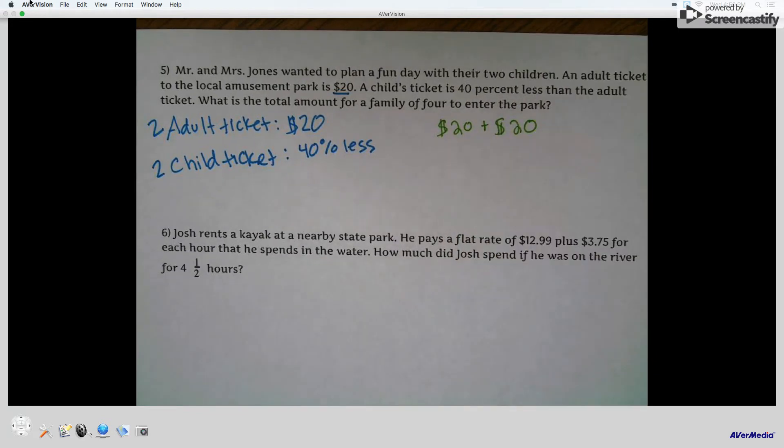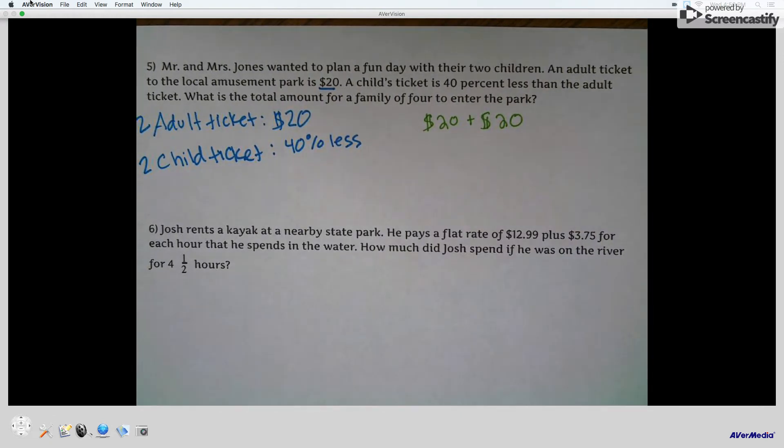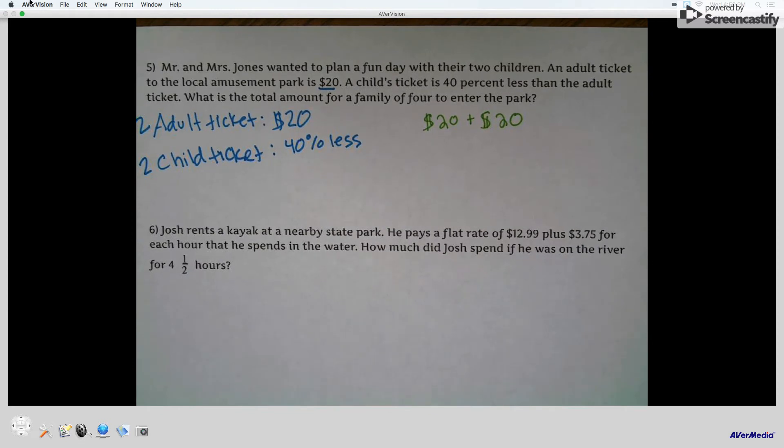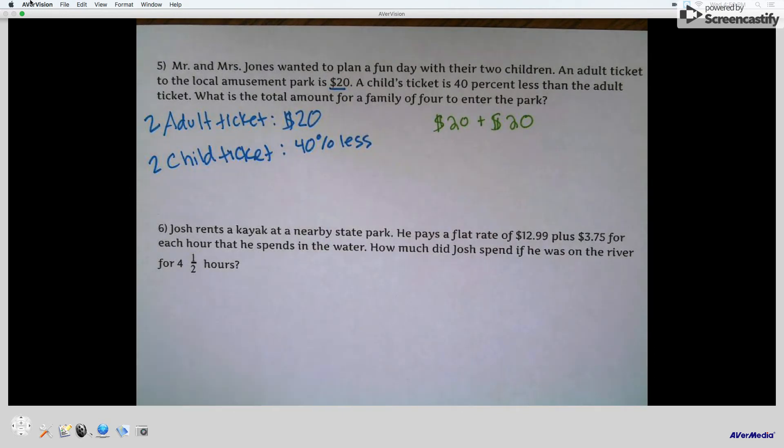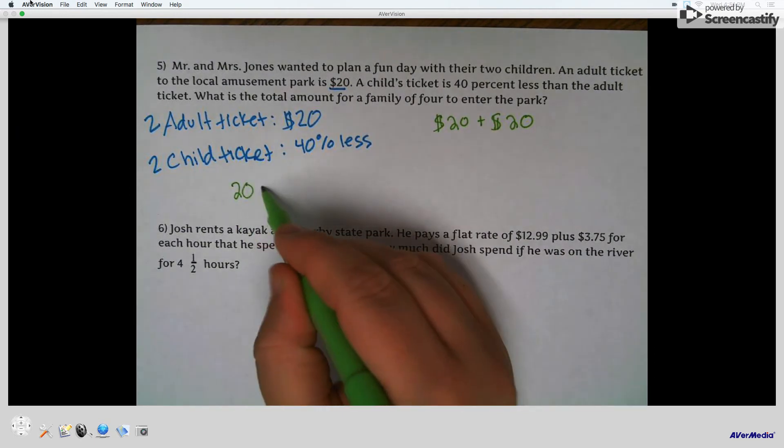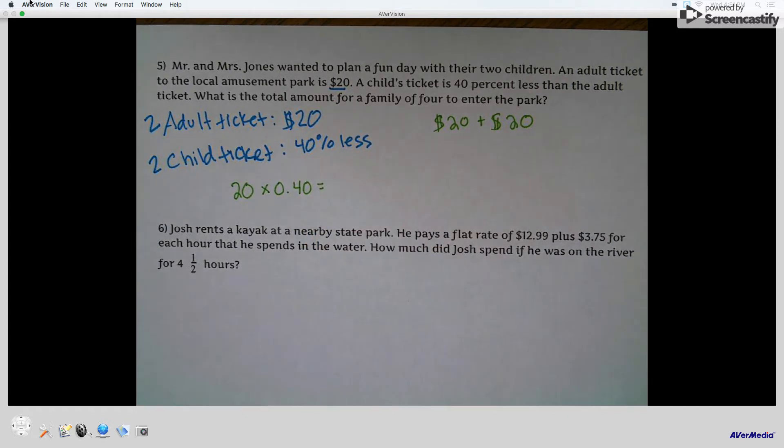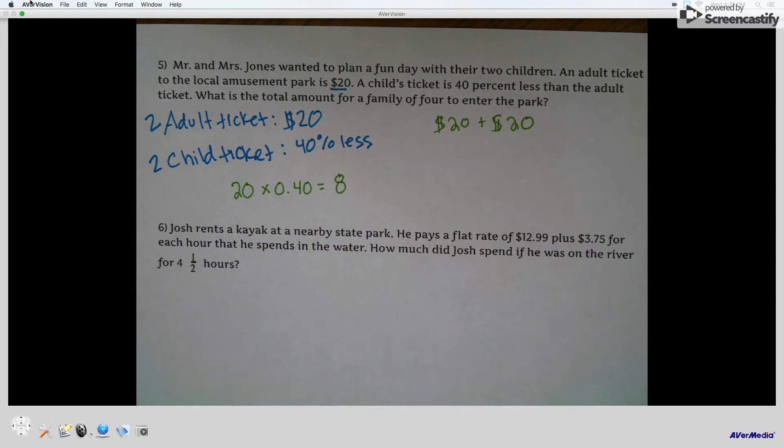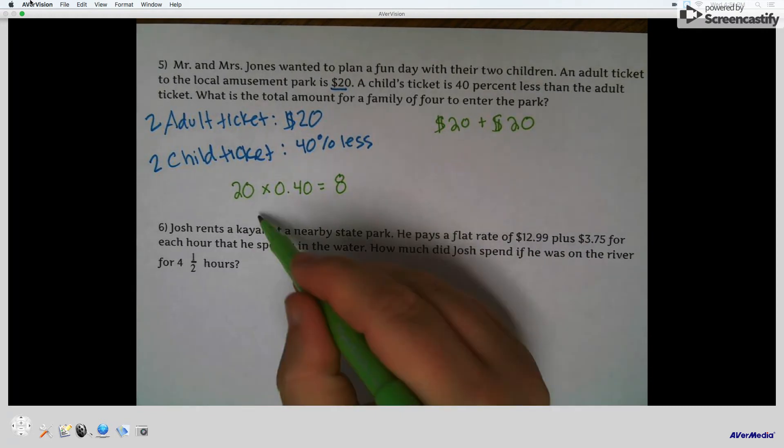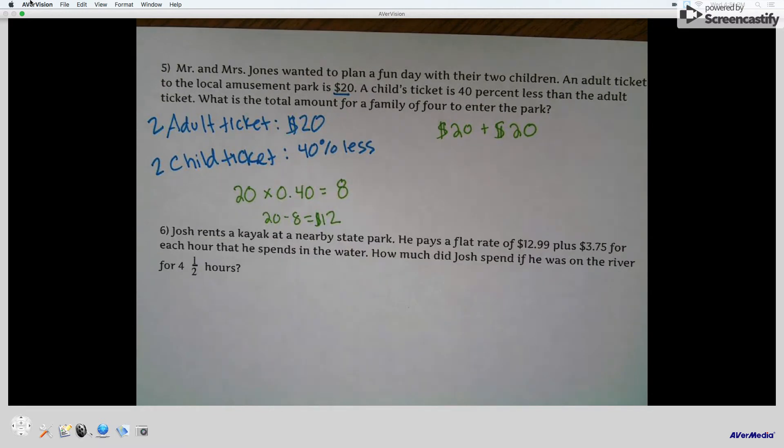But now we have to factor how much is 40% less. So the way that I do this is, there's two ways you can do this, actually. 20 times 0.40. And you can use your calculator. And you'll get that that's $8. That's how much you have to subtract, okay?